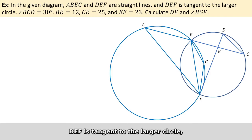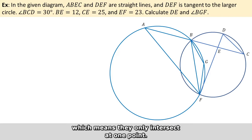D, E, F is tangent to the larger circle, which means they only intersect at one point.